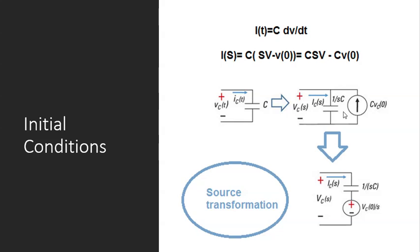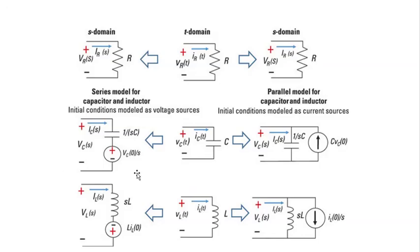So from now on, if you have a circuit with a capacitor with initial condition, you just redraw that circuit and model your capacitor with initial condition either with a capacitor without initial condition in parallel with a current source of value C·V₀⁻, or in series with a voltage source of value Vc₀⁻/s. Exactly the same story is true for inductors.